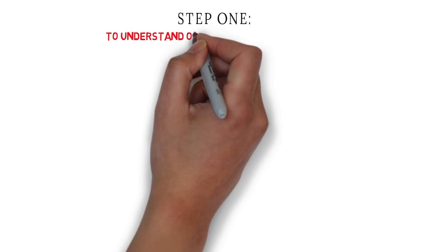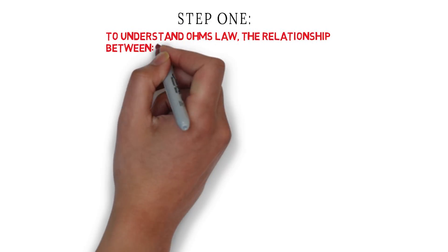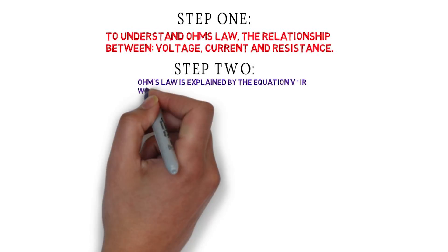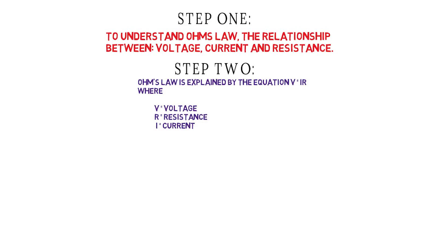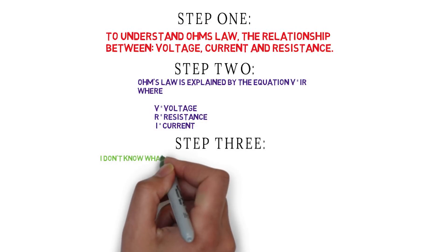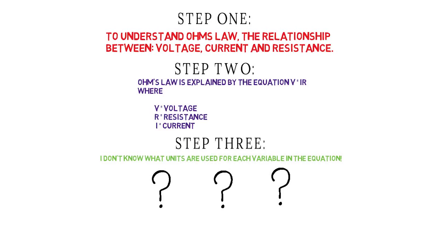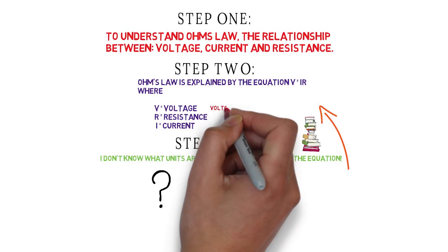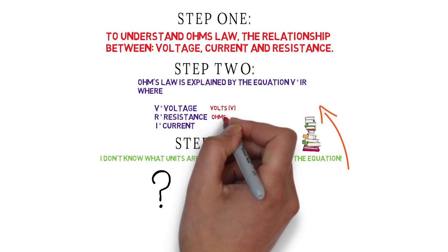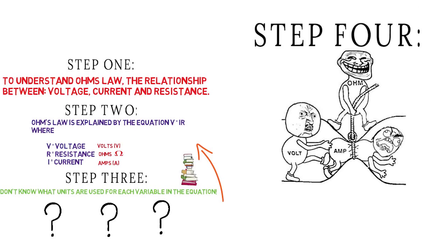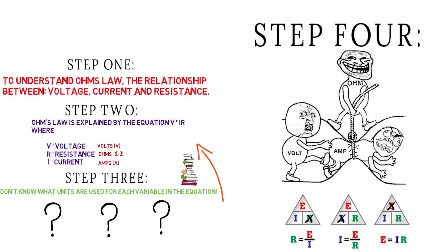Let's say we're trying to understand the relationship between current, voltage, and resistance in a wire. In step one, we outline that concept. In step two, we spill out all the things we know and try to make it simple and easy for anyone to understand. In step three, we look at our step two and see where we have gaps — in this example, we didn't really know what the units were for each component, so we'd look at the textbook or ask our lecturer. In step four, we use analogies, diagrams, and things that spark our memory. This diagram here is rather relevant for this particular problem and explains things very nicely for us to conceptualize.